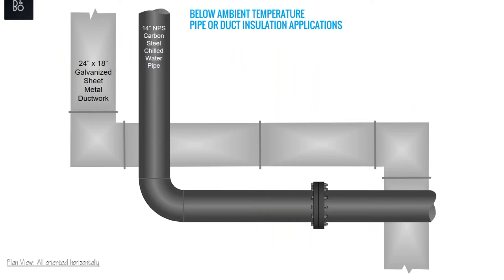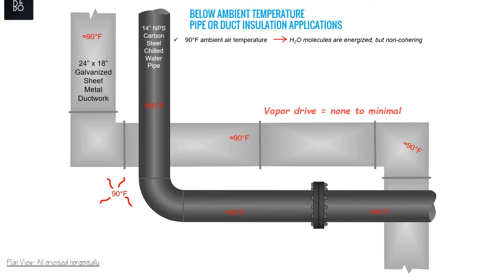Let's imagine we're in an equipment room vented to the outside — essentially at ambient air temperature. We have a 14-inch chilled water pipe and a 24 by 18 galvanized sheet metal duct. With 90°F ambient, when the system isn't running, everything is at ambient temperature. Water molecules are flying around but find nothing attractive — none to minimal vapor drive. Let's change things up.